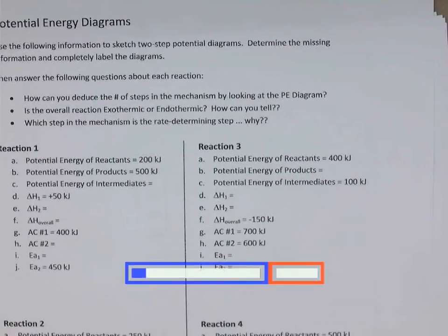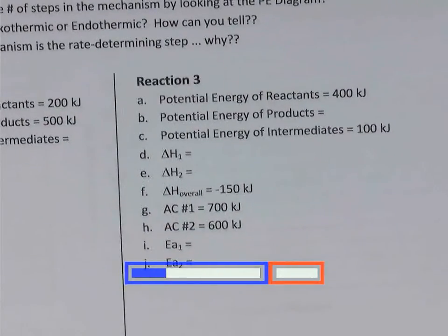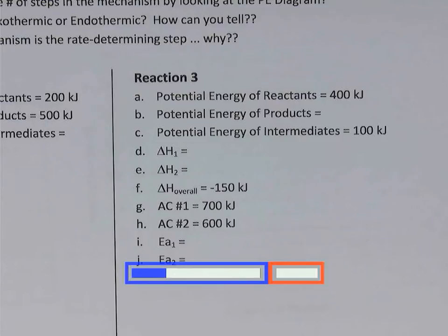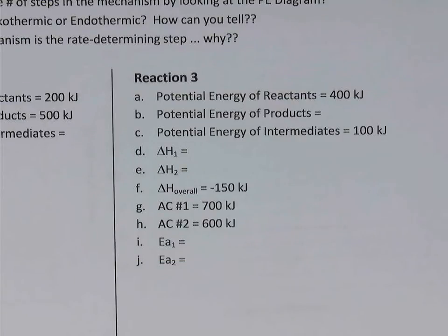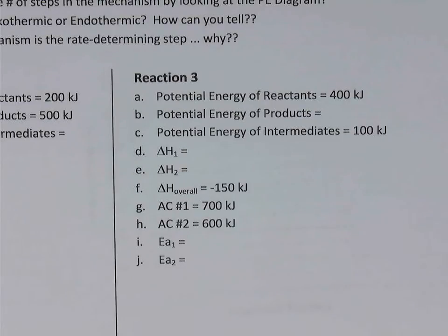Let's take a look at reaction number three. Pause the video here and use the given information to sketch the diagram. We're given the potential energy of reactants at 400 kilojoules, intermediates at 100 kilojoules. We're not told the potential energy of the final products, but we're given the delta H for the overall process: negative 150 kilojoules. We're also given the energy for each of the two activated complexes, AC1 and AC2 — also known as transition states.